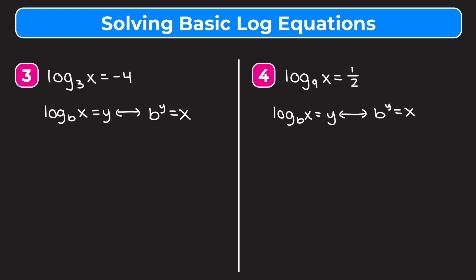Example 3 is log base 3 of x equals negative 4. Try this one on your own first. We change it into exponential form: the base 3 is raised to the negative 4th and set equal to x. Remember, 3 to the negative 4th is the same as 1 over 3 to the 4th. Since 3 to the 4th is 81, we get x equals 1 over 81.